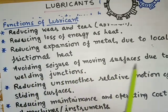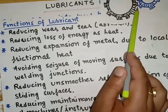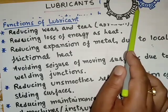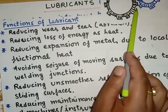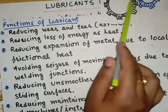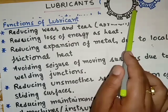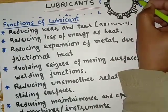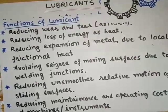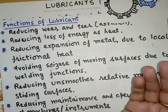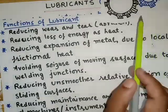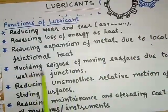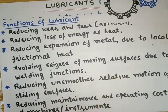The fourth function of a lubricant is avoiding seizure of the moving surfaces due to welded junctions. When frictional heat is produced due to lack of lubricant, it causes very high local temperature that the metal may melt, and when cooled it results in welding of the metal parts. When these metal parts get welded, seizure of metal movement takes place — meaning the machinery stops working. Therefore, the introduction of a lubricant avoids seizure of the moving surfaces and the machinery works properly.